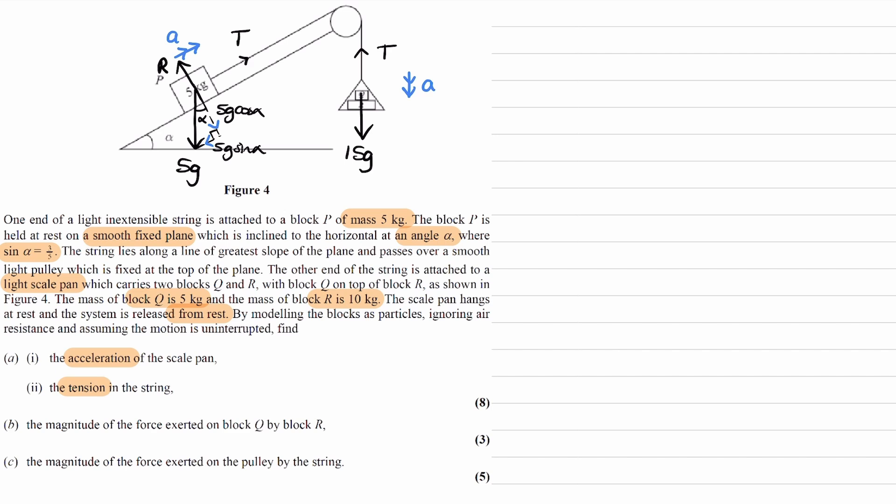For the 5 kilogram mass, we will have the force going up the slope minus the force going down the slope, which is the 5G sin alpha. So, force going up the slope minus the force going down the slope. That's the resultant force up the slope. That will be equal to MA. So, 5A. Let's call that equation 1.